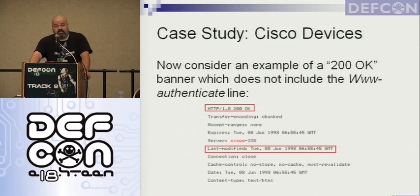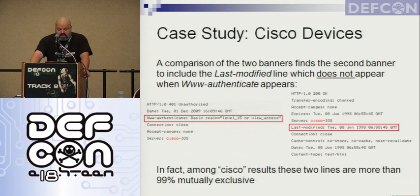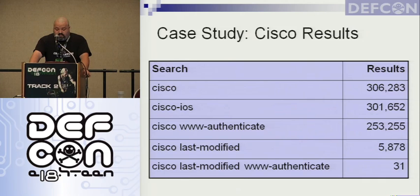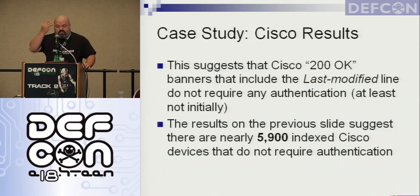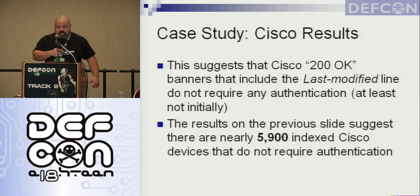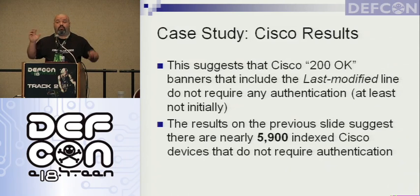Putting these side by side, www-authenticate and last-modified are almost 99.9% mutually exclusive. Searching Shodan for Cisco as of last night returns 306,000 devices; www-authenticate 253,000; last-modified 5,800; and only 31 have both lines. So if we get a 200 OK with a Cisco device, chances are it requires no authentication at all. We have about 5,900 Cisco devices on the internet publicly facing that require no authentication at all to view, change configurations, do whatever you want — you've already owned them.